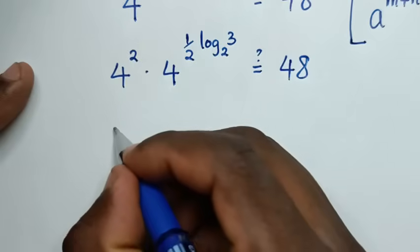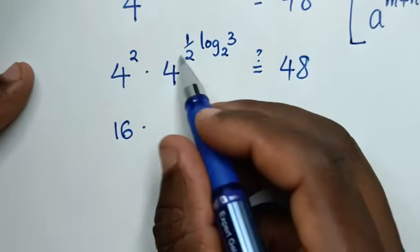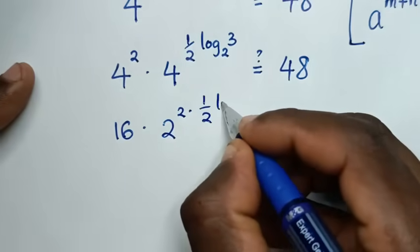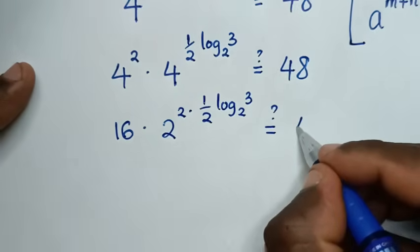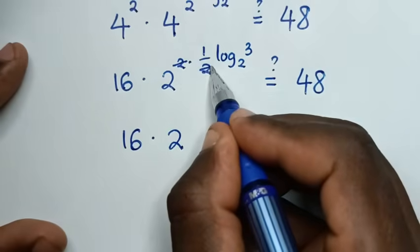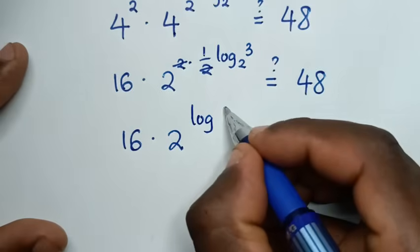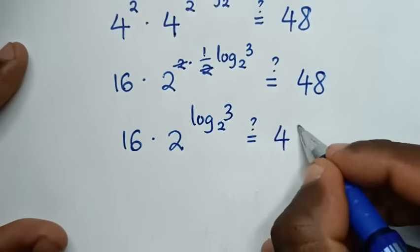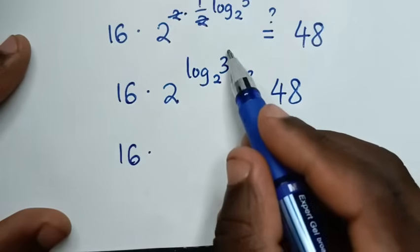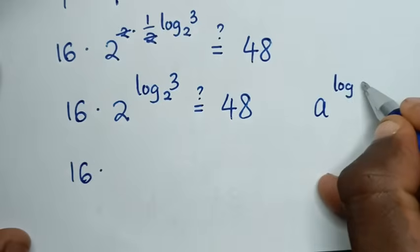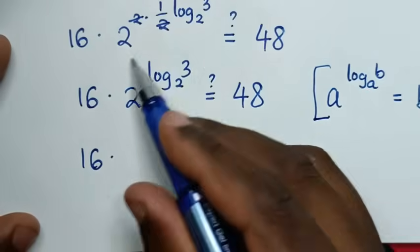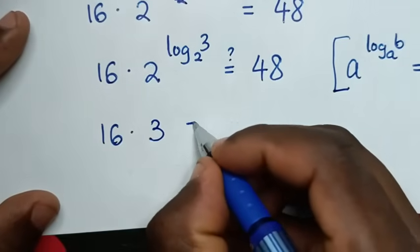4 squared is 16, times 4 — and 4 is the same as 2 square — so it becomes 2 square to the power of a half log of 3 base 2, equal to 48. Then 16 times 2 power of log of 3 base 2. This part is in the form of a power of log of b base a, which is equal to b. So 2 power of log of 3 base 2 is the same as 3, giving us 16 times 3 equals 48.